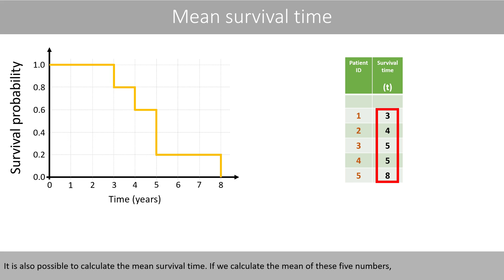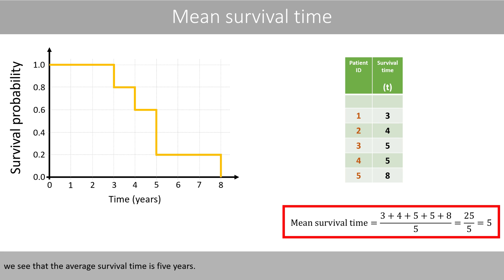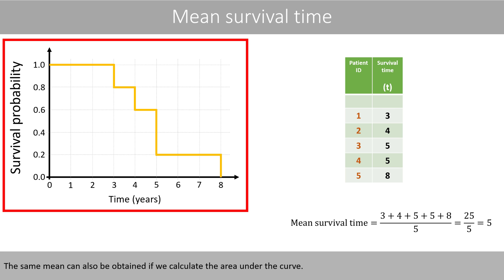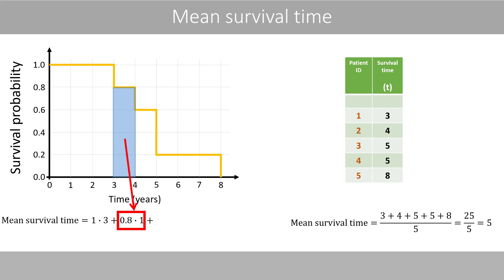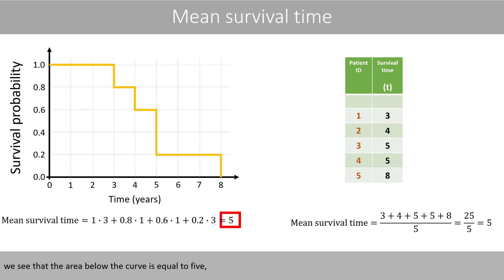It is also possible to calculate the mean survival time. If we calculate the mean of these five numbers, we see that the average survival time is five years. The same mean can also be obtained if we calculate the area under the curve. If we calculate the area of the rectangles below the curve, we see that the area below the curve is equal to five, which corresponds to the mean survival time.